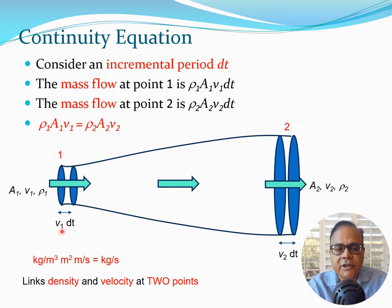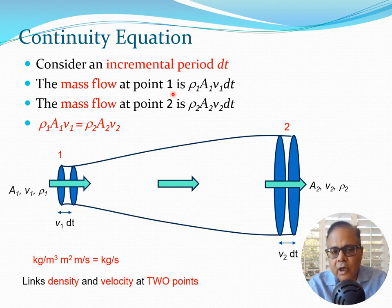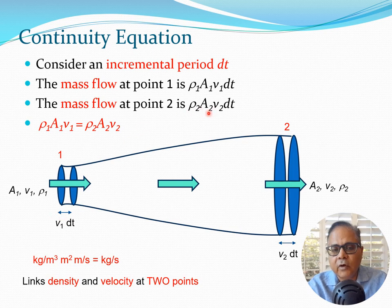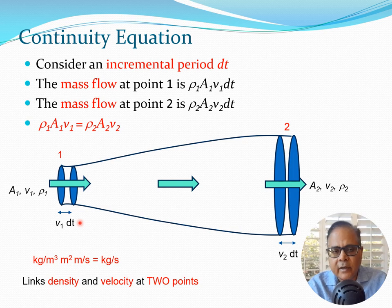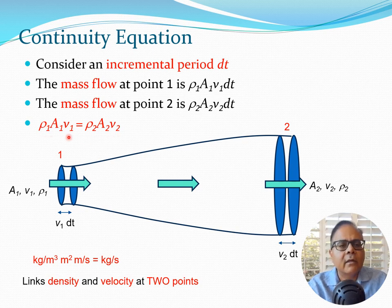Using this nomenclature we can derive the continuity equation. During a small time dt, the mass flow at point 1 is ρ₁ A₁ V₁ dt (density times the volume A₁ × V₁ dt), and the mass flow at point 2 is ρ₂ A₂ V₂ dt. Because mass is conserved — whatever mass goes in must come out — we equate these two expressions.